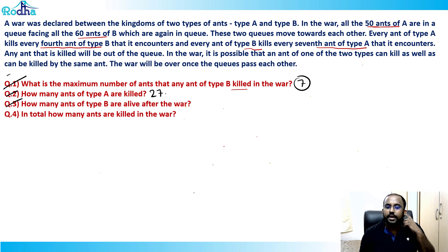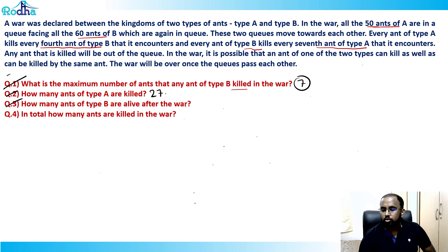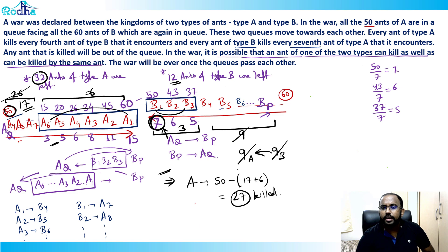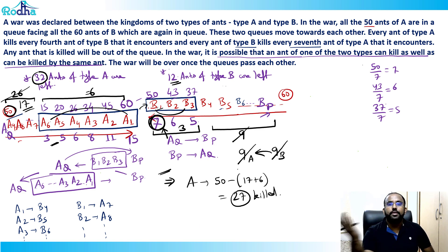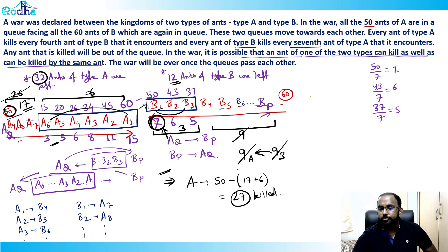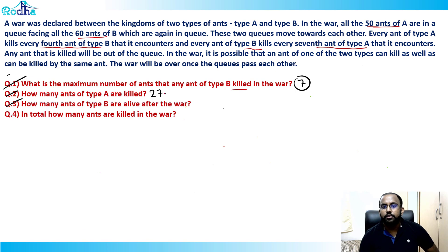Question 3: How many ants of type B are alive after the war? Only b1, b2, and b3 survive — so 3 ants of type B are alive.